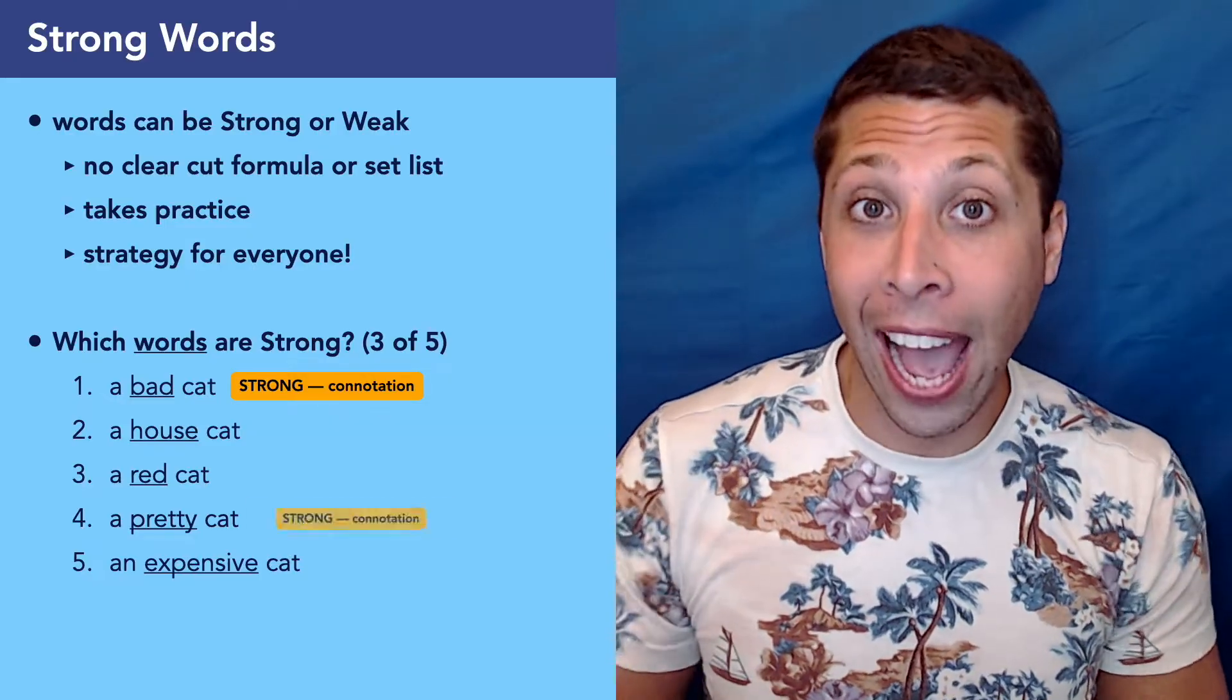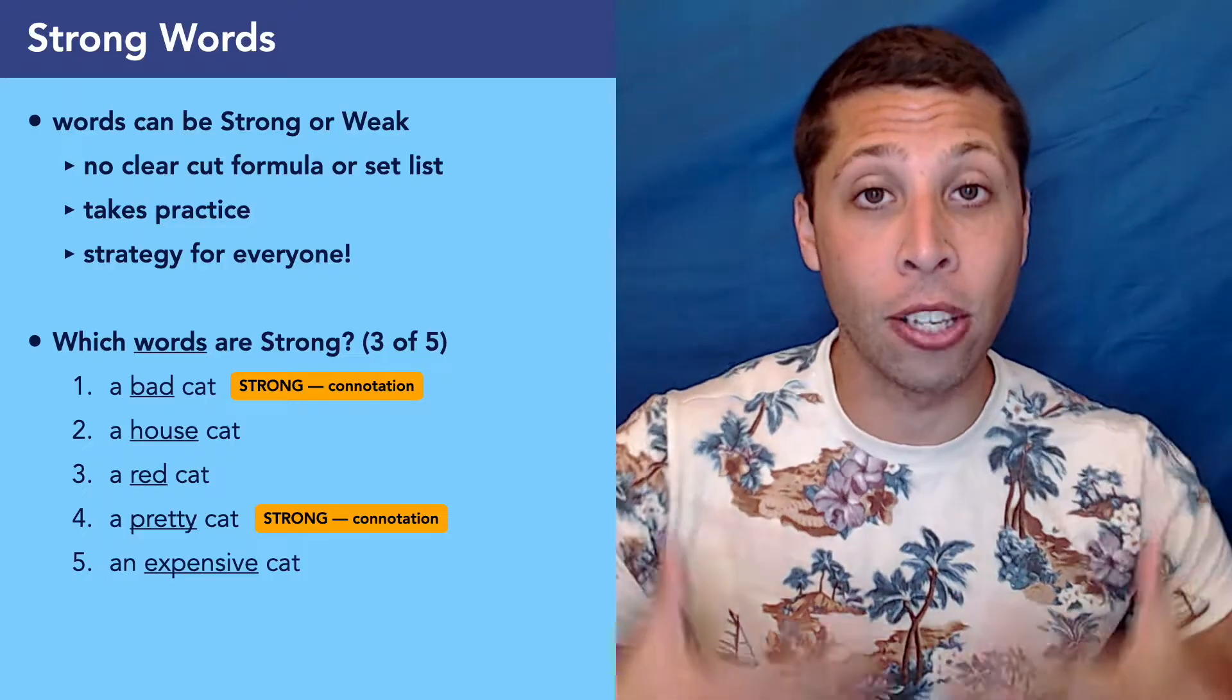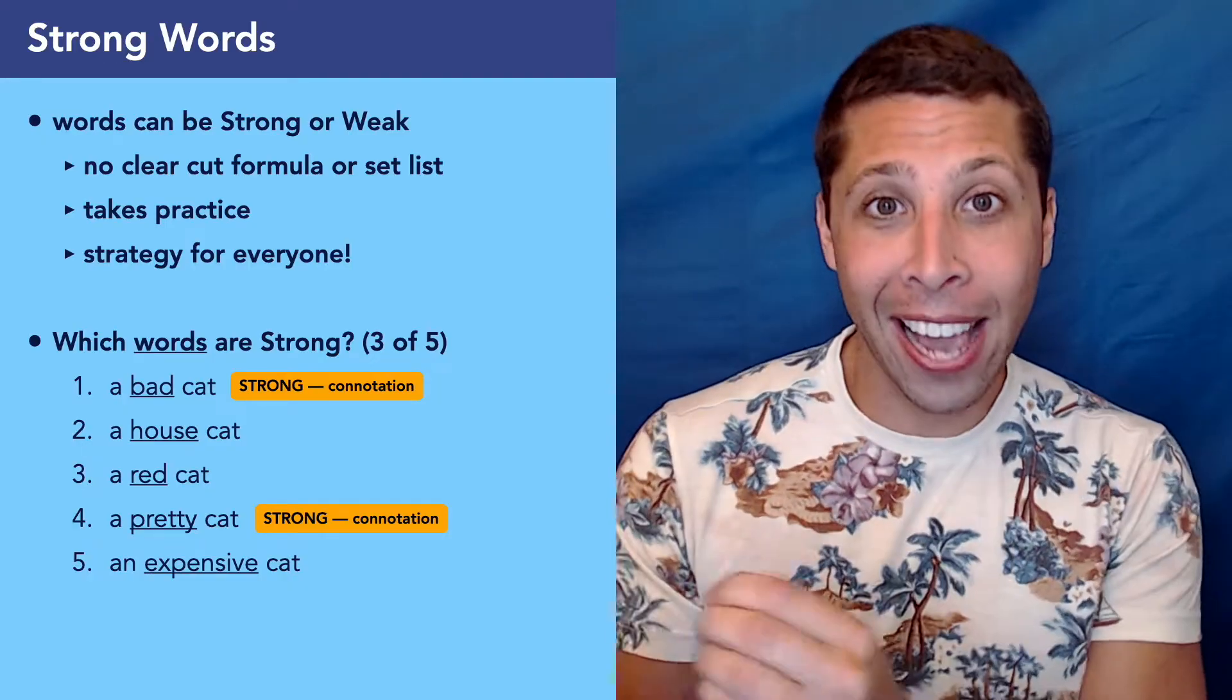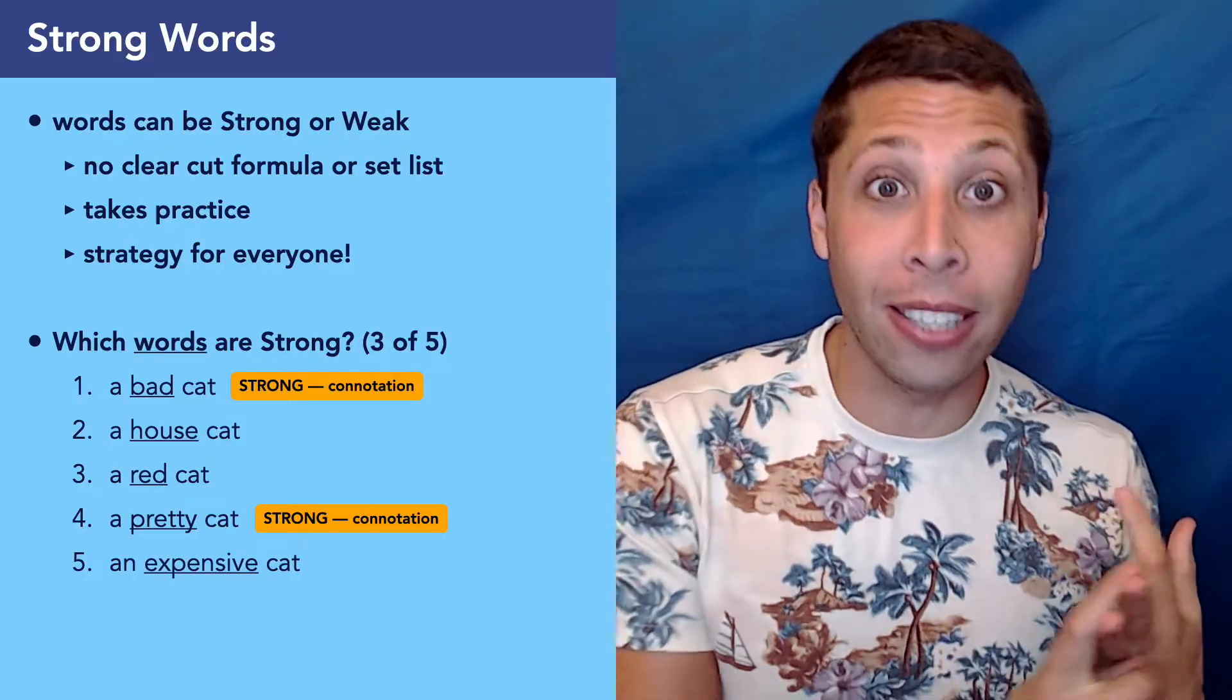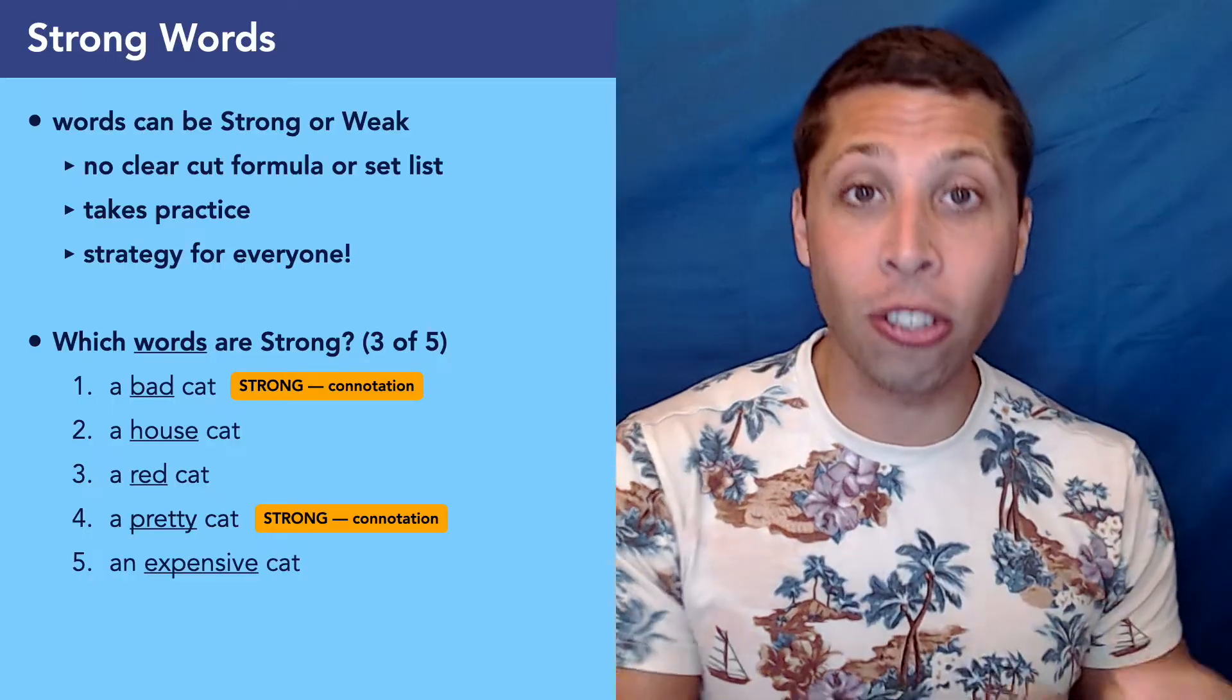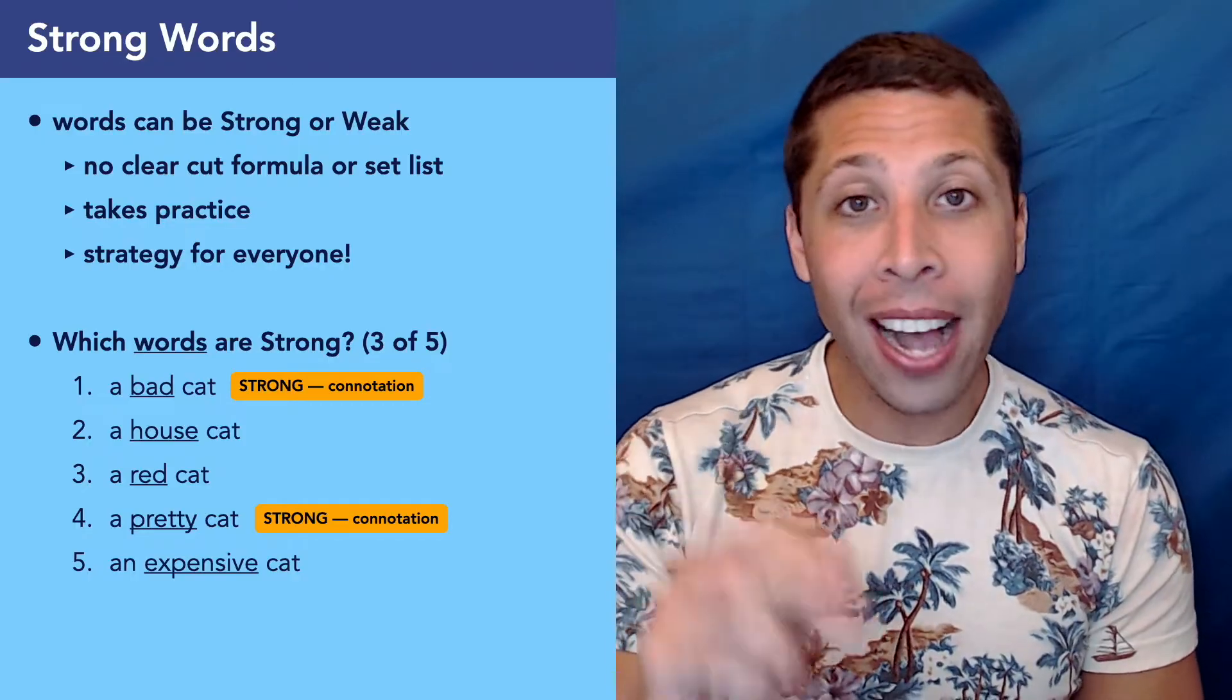If the rest of the passage was making a really big deal about how weird it was that this cat was red, I would rethink my opinion, but by itself a color is not really giving me any sort of meaningful understanding of this cat. Whereas if we said it was a pretty cat, now my opinion of the cat has changed in a meaningful way. It's definitely a positive connotation, but actually pretty cat is even stronger than bad cat. Bad cat, there's lots of ways for a cat to be bad. But if you tell me it's a pretty cat, it's a good cat, but it's good in this very specific way of how it looks.